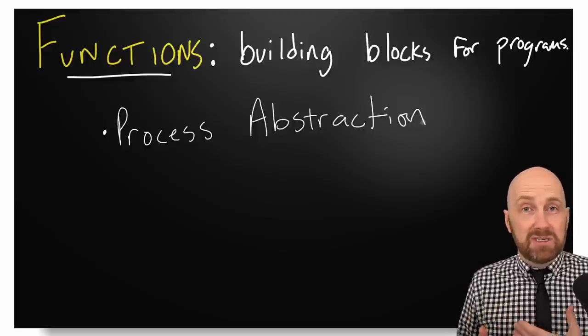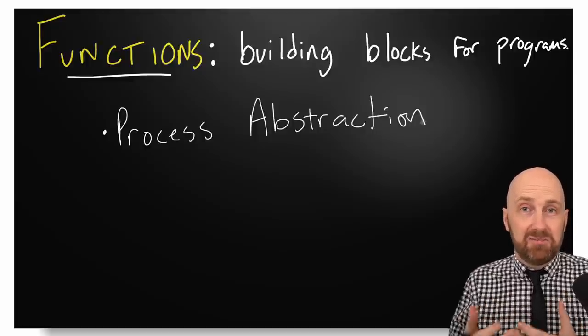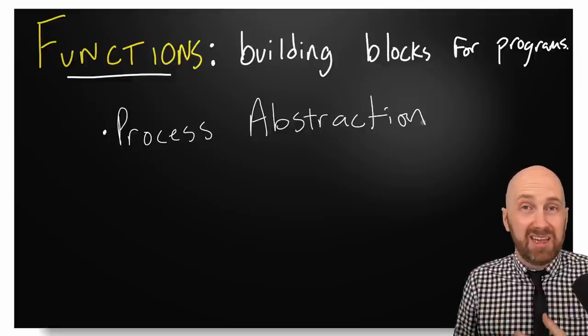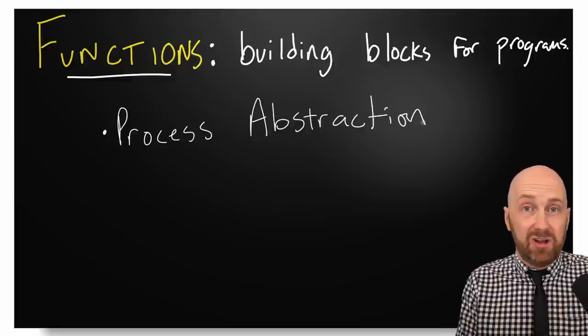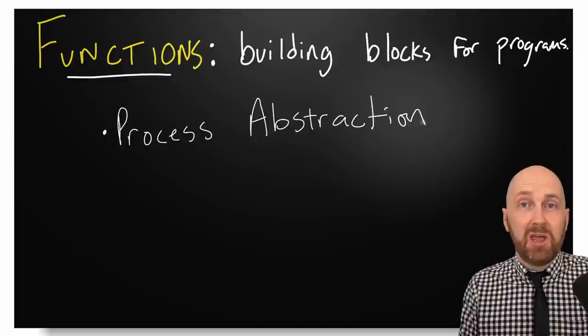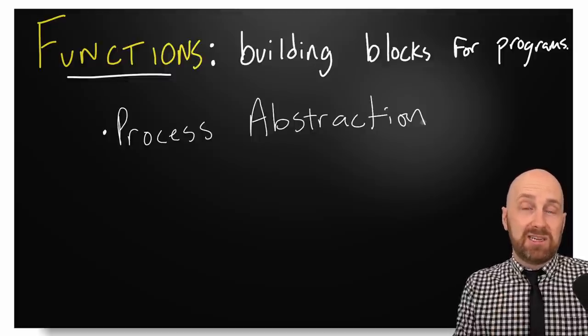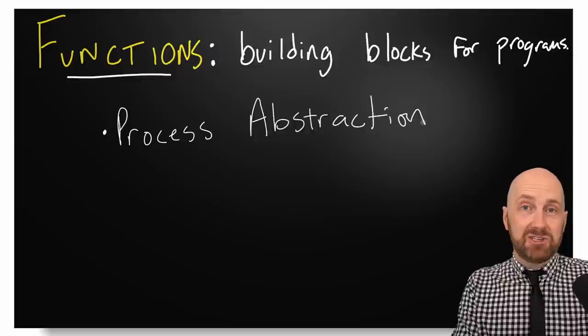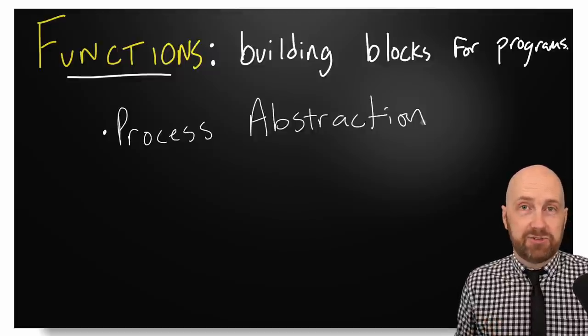And what you get to use as the customer is the ordering interface where you say, hey, I want a pizza and here are a few details about it that will customize the pizza that you're making for me. But I'm going to leave the details to the abstraction. And that's what process abstraction is.